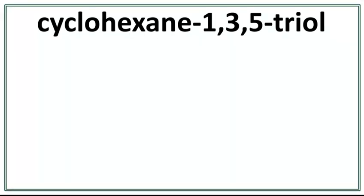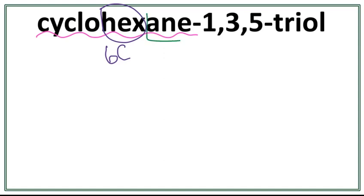Let's draw the structure for cyclohexane-1,3,5-triol. This is an alcohol, and the name of the parent chain is cyclohexane. 'Hex' tells us that there are six carbons present in the parent chain. 'An' tells us that there are only single bonds present between the carbons in the parent chain. 'Cyclo' tells us that these carbons are arranged in a ring.